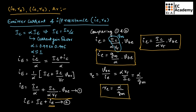If we take alpha as approximately equal to 1, we can write Re equals 1 divided by Gm. So this is the expression for Re.